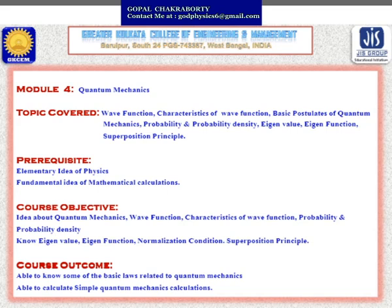Pre-requisites for these topics are an elementary idea of physics and a fundamental idea of mathematical calculus. The course objectives are: idea about quantum mechanics, wave function, characteristics of wave function, probability and probability density, eigenfunction, eigenvalue, normalization condition, and superposition principle. The corresponding course outcomes are that students will be able to know some of the basic laws related to quantum mechanics and will also be able to calculate simple quantum mechanical calculations after completion of this course.